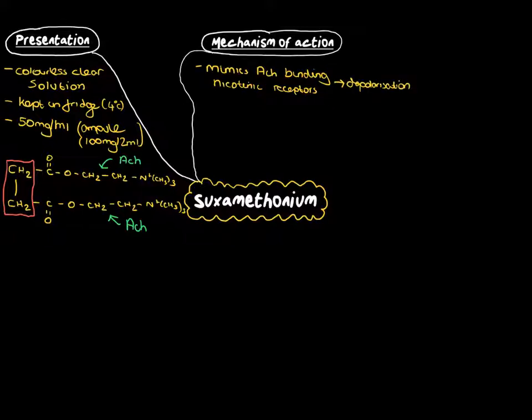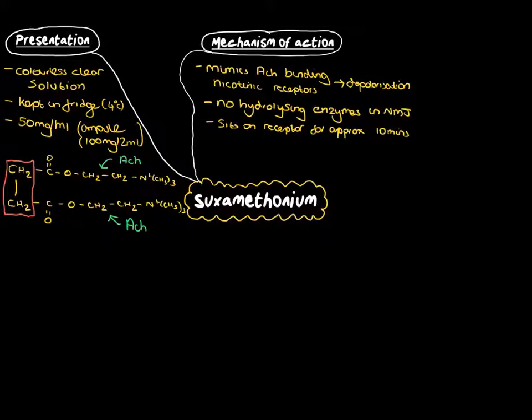There are no hydrolyzing enzymes for succs within the neuromuscular junction, and a lot of it, as we see in the pharmacokinetics section, gets hydrolyzed before it gets there. It sits around on the receptor for about 10 minutes and then dissociates or gets broken down, and therefore it's a very short acting depolarising neuromuscular drug.